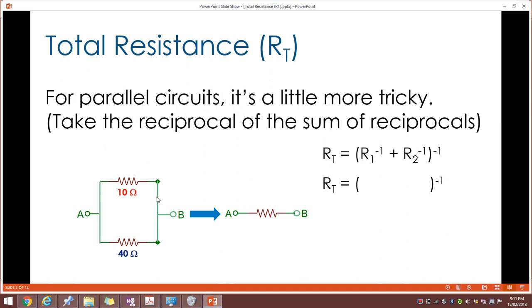To work out the total effective resistance of this circuit we take the first resistor and we take the reciprocal raised to the power of negative one, effectively one over ten that is. And we add to that the reciprocal of resistor two. So we have one over ten plus one over forty and then we take the reciprocal of that particular sum.